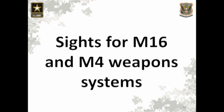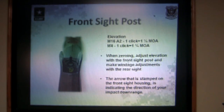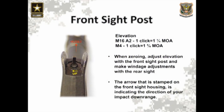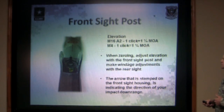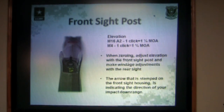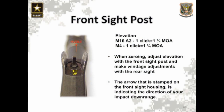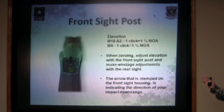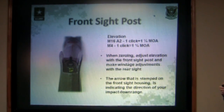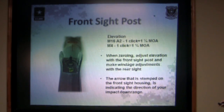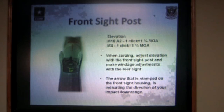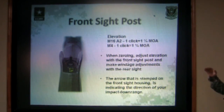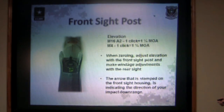Now we're going to talk about the different sighting systems on the M16 and M4 weapon system. On the front sight post of an M16 A2 rifle, each click moves you one and a quarter minutes of angle up or down. On the M4 rifle, each click is worth one and three-quarter minutes — that's due to the shorter sight radius from the front sight post to the rear sight aperture. As you shorten the sight radius, each click is worth more. When zeroing, adjust the elevation with the front sight post and make your windage adjustments on the rear sight. Your rear sight has to be set at 8/3 or 6/3 to get a good zero.